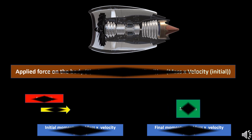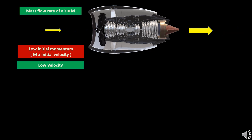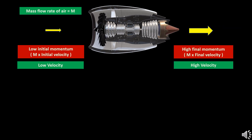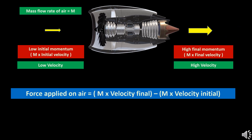Before entering the engine, air has very low momentum — mass times velocity initial. Once the air enters the engine and reaches the nozzle, the nozzle increases the velocity of the air, thus increasing the exit or final momentum of the air. By Newton's second law, this change in momentum means a force has been applied on the air.